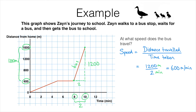As with the previous question, meters per minute is unusual, so let's convert to meters per second. 600 meters every minute means 600 meters every 60 seconds. To find how far in one second, divide by 60: 600 divided by 60 gives 10, so the speed of the bus is 10 meters per second. We can check: 10 meters per second times 60 seconds gives 600 meters per minute, which confirms our answer.